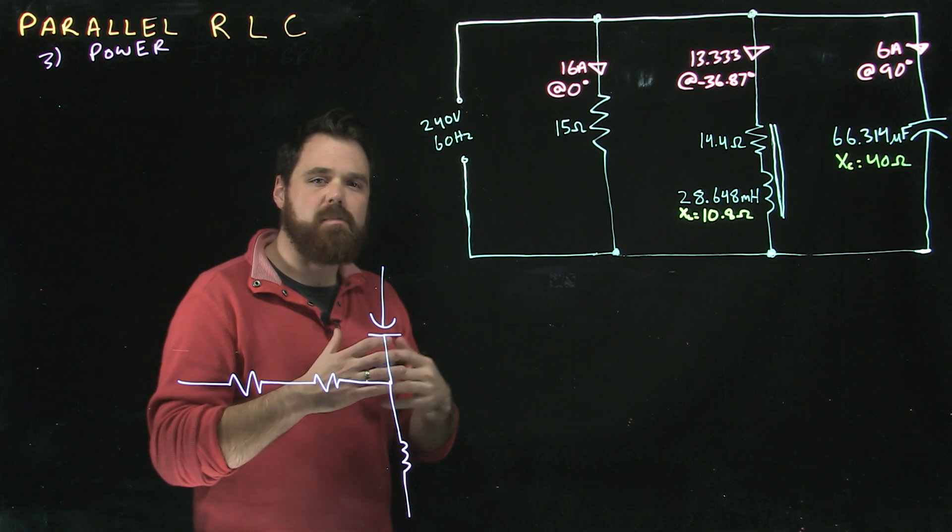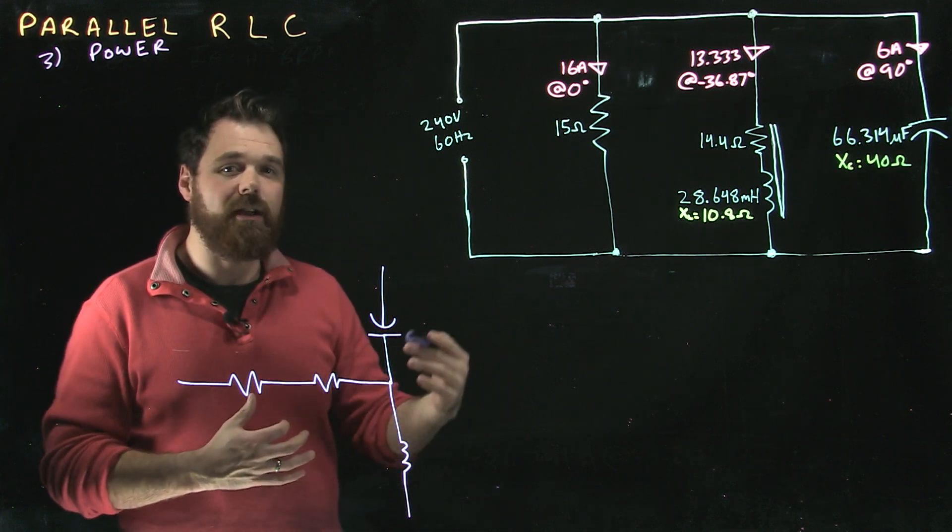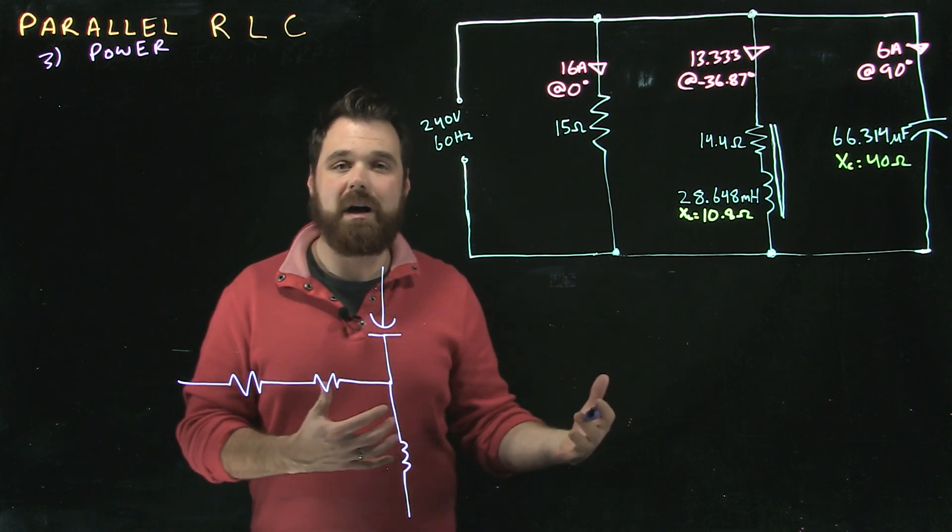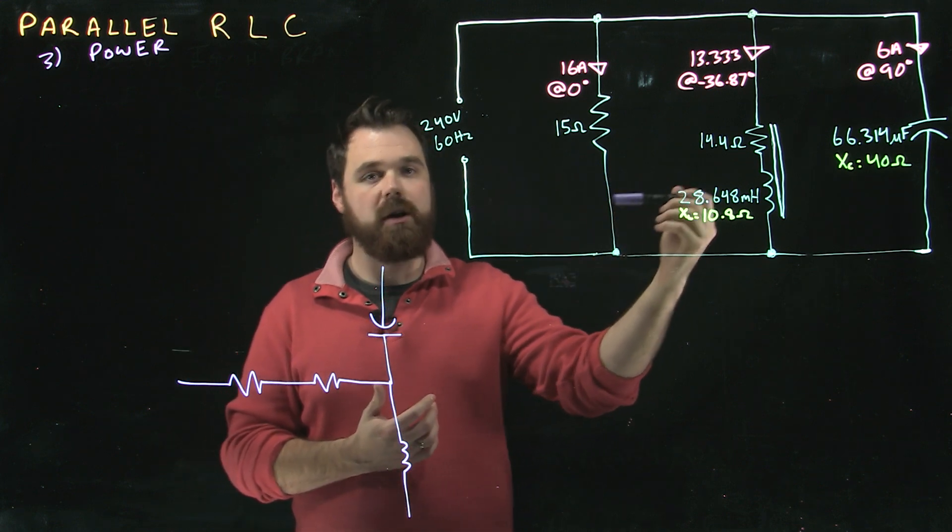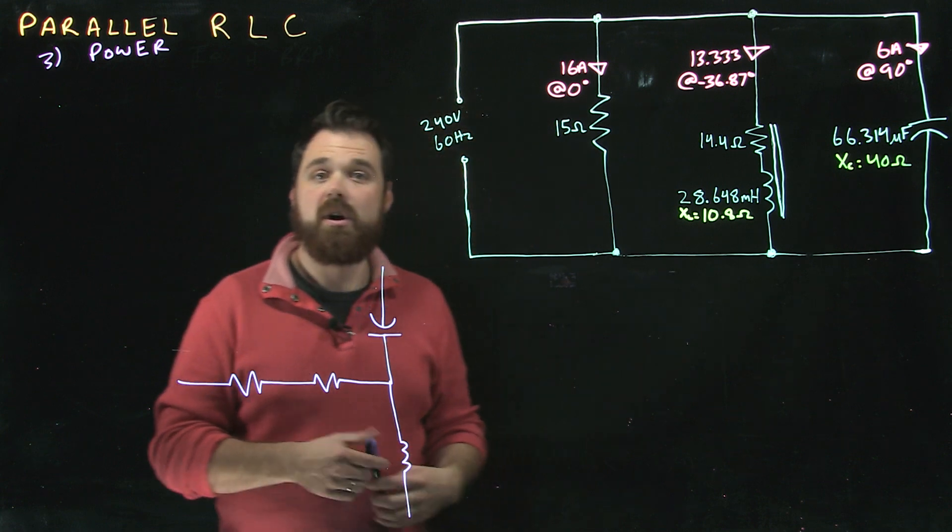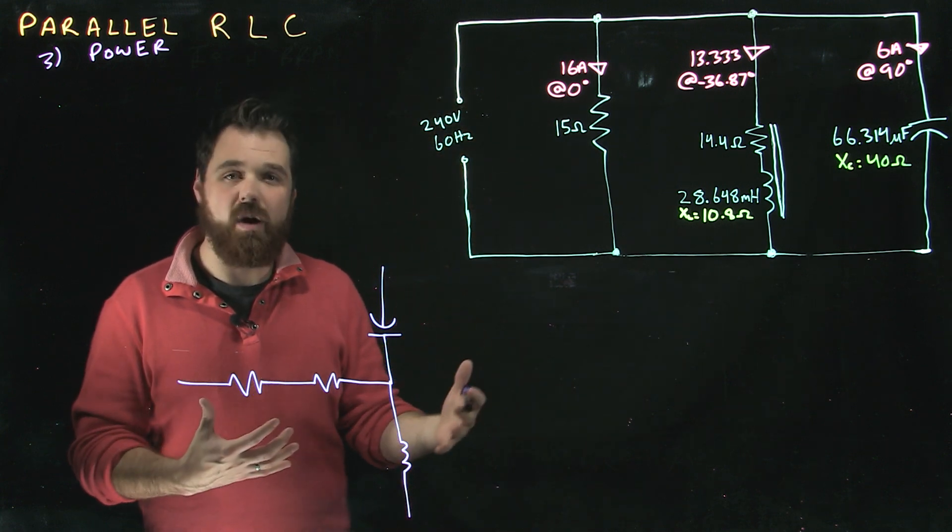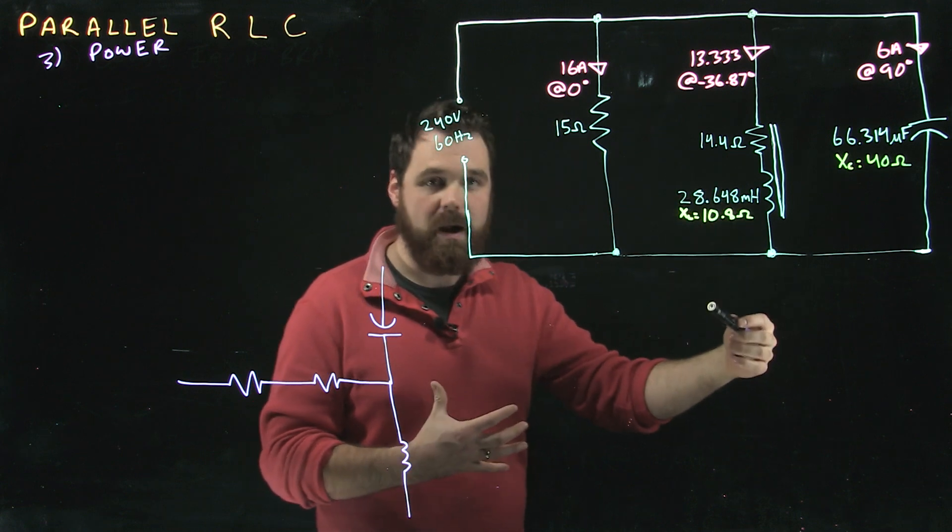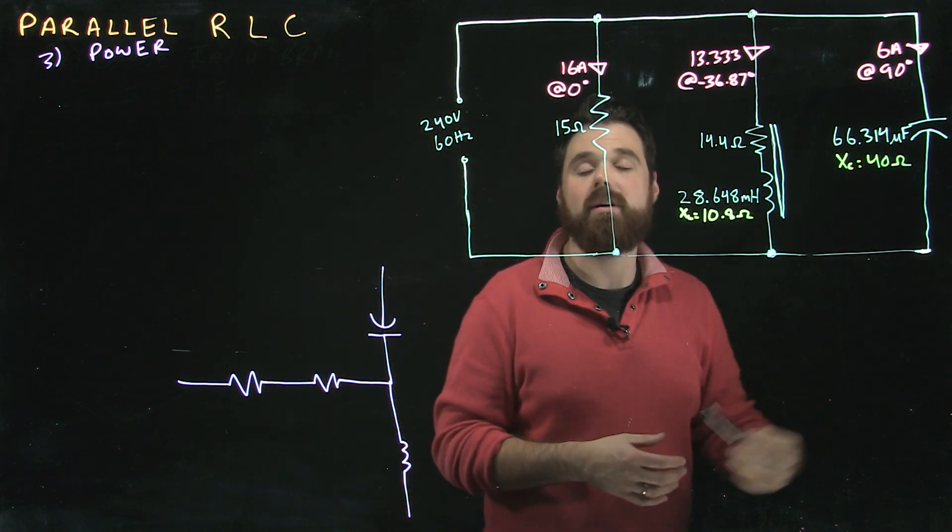So we have to keep in mind a couple of the basic rules about power in both series and parallel circuits, which is our watts can add up. Pt is going to equal P1 plus P2 plus P3. Also our reactive power is going to add up. The reactive power in branch 1 plus the reactive power in branch 2 plus the reactive power in branch 3.